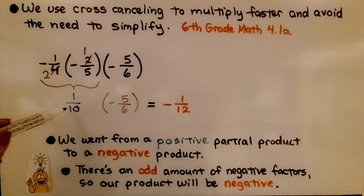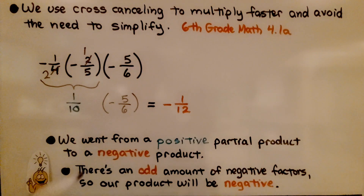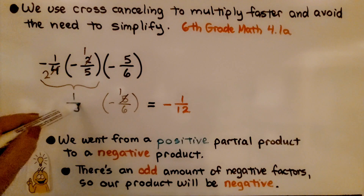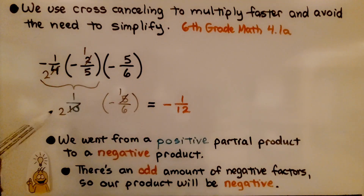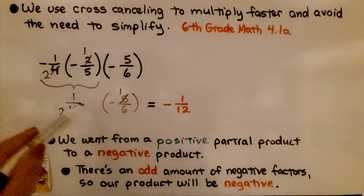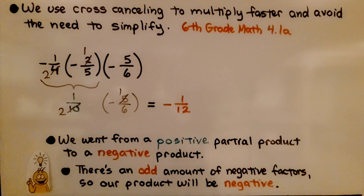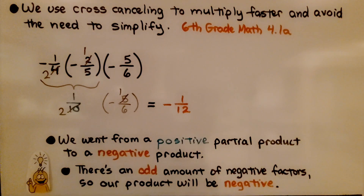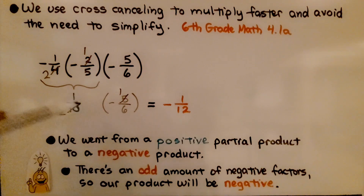Now we multiply positive one-tenth times negative five-sixths. We have one five here and two fives here, so we cancel. Now we have one times one is one and two times six is twelve. Positive times negative gives unlike signs, so we get negative one-twelfth. We went from a positive partial product to a negative product, and there's an odd amount of negative factors, so our product is negative.